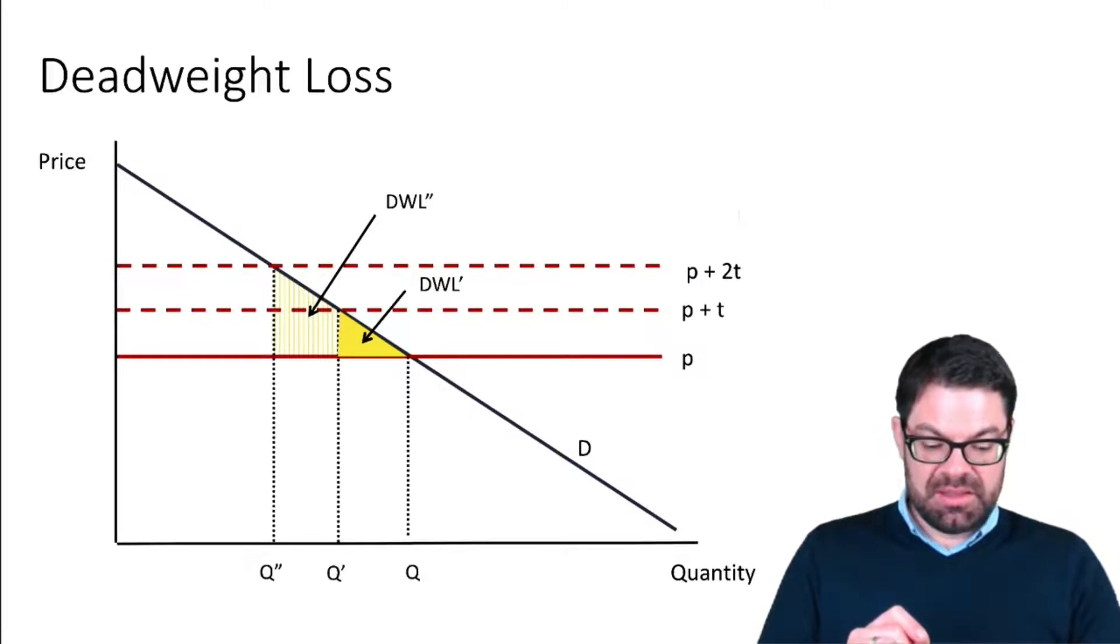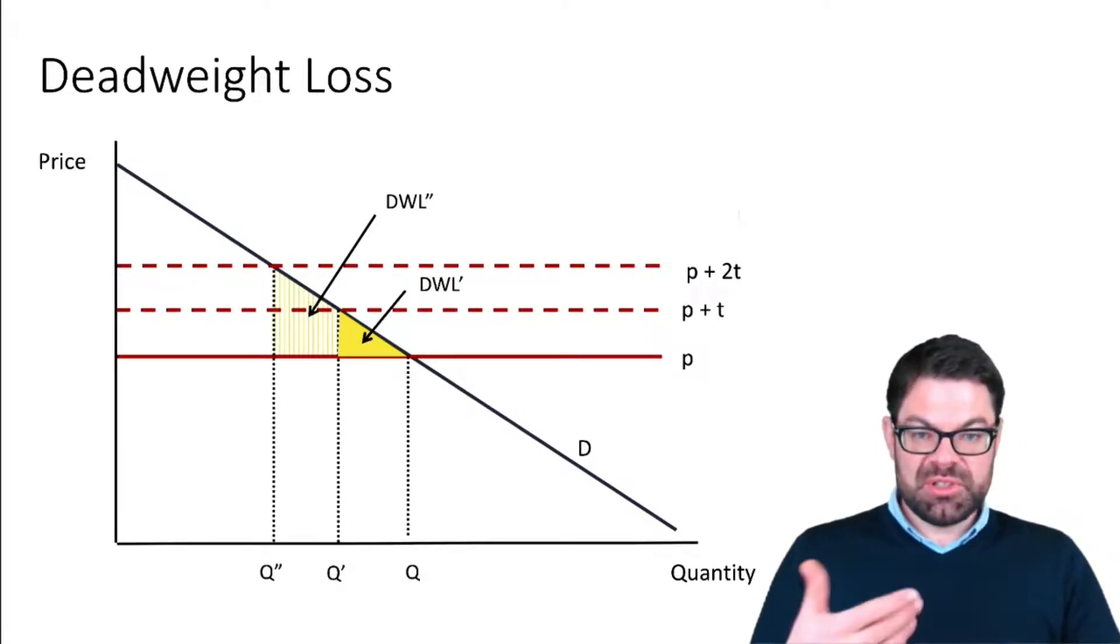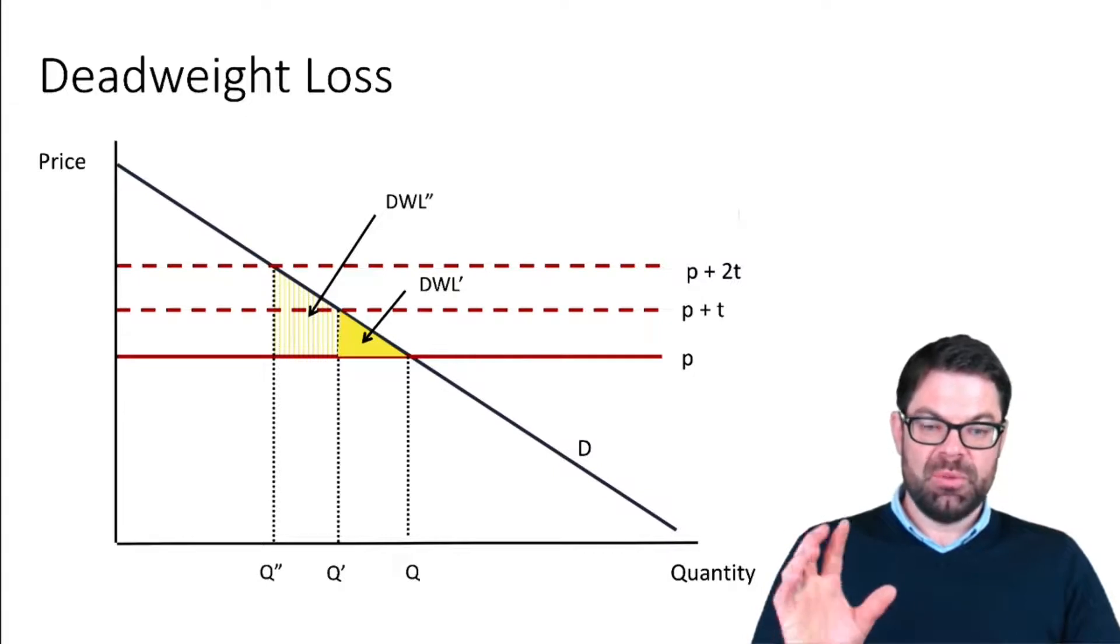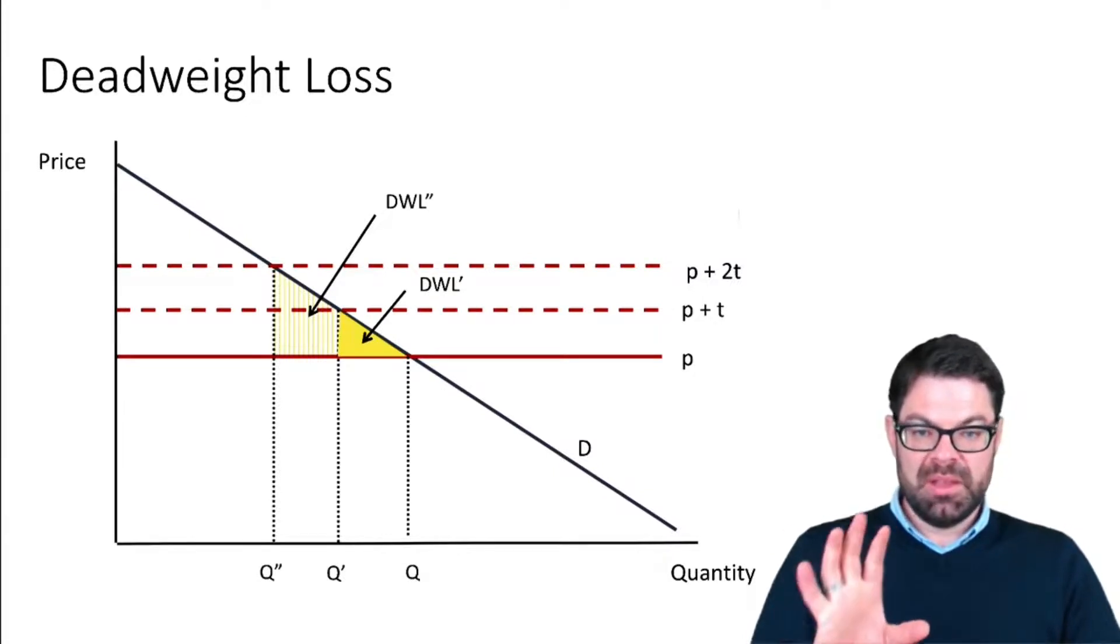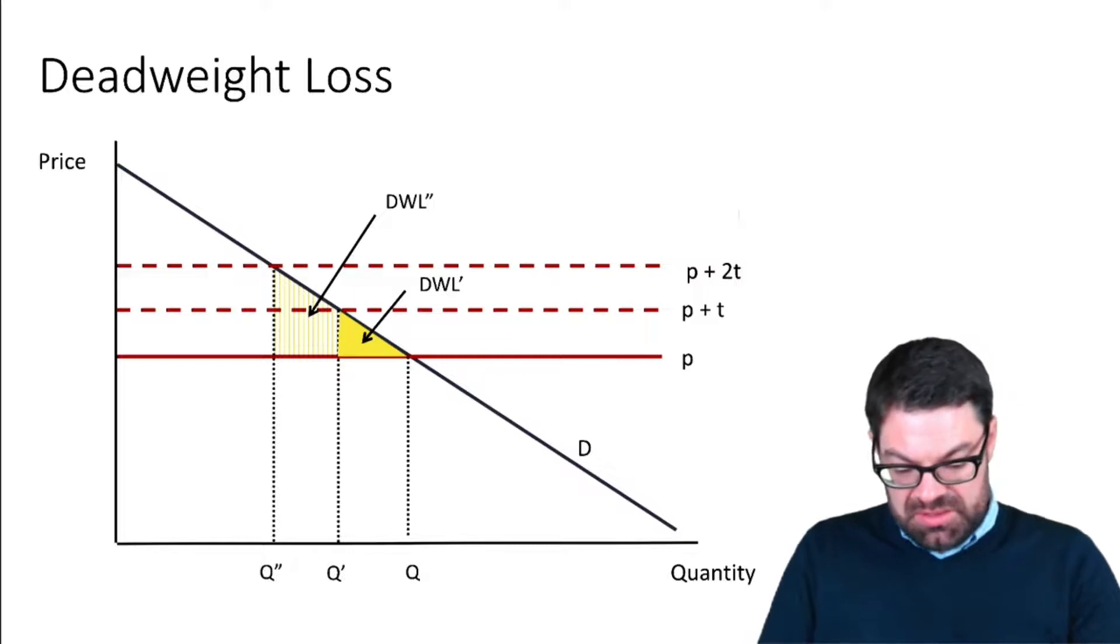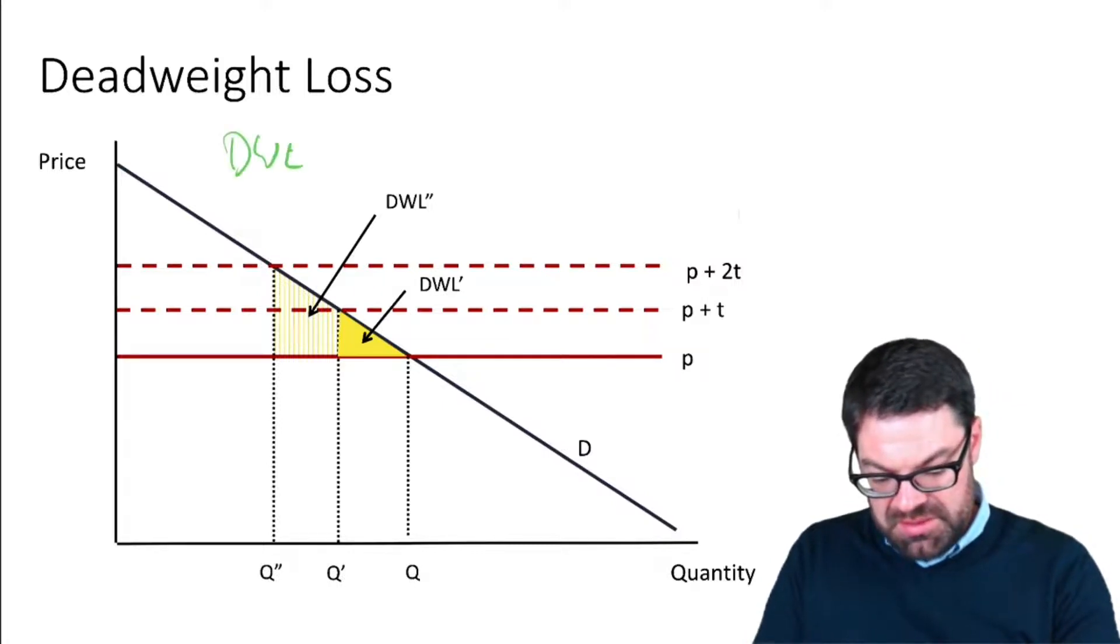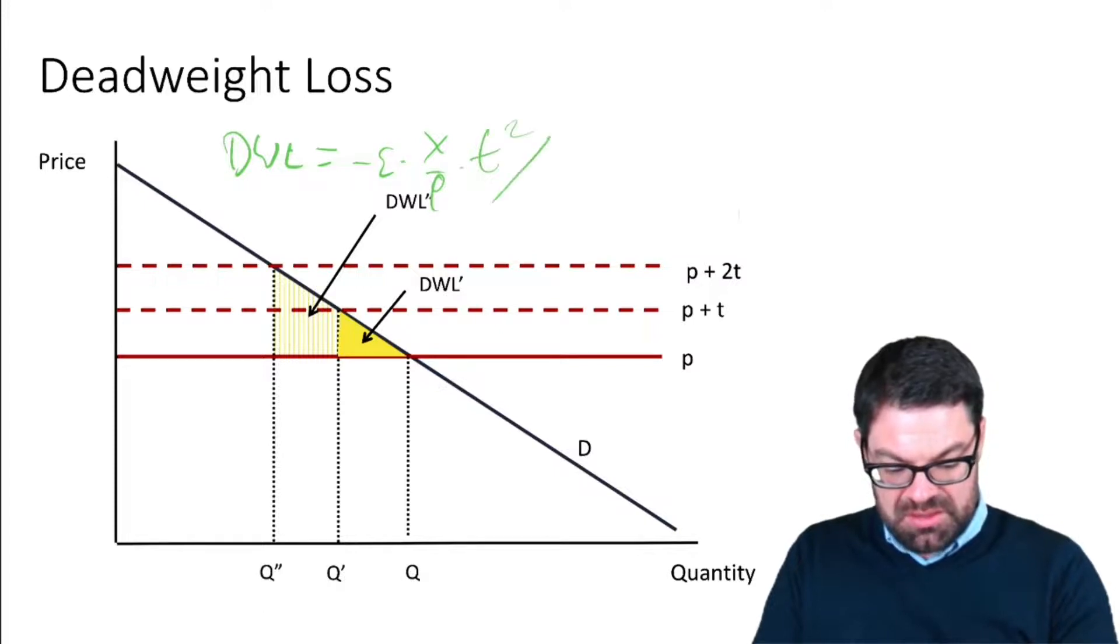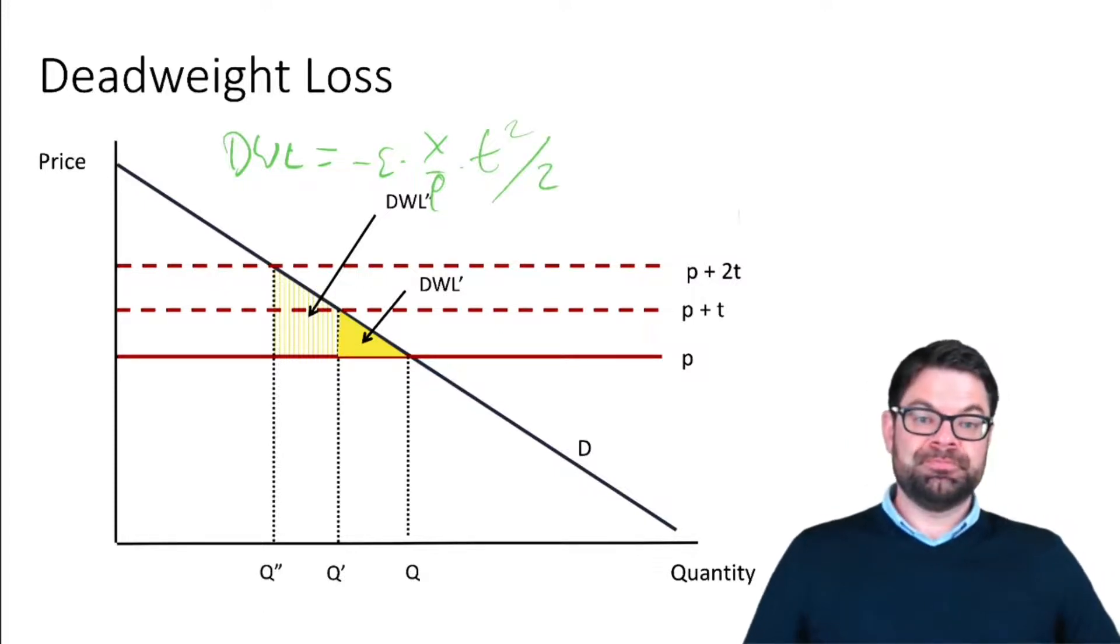Now the second property of the deadweight loss is that it is proportional to the square of the tax rate. What does that mean? Let's look into this again. Remember the deadweight loss equals minus epsilon times x/p times t squared divided by two. Now we want to look at that t squared relationship.